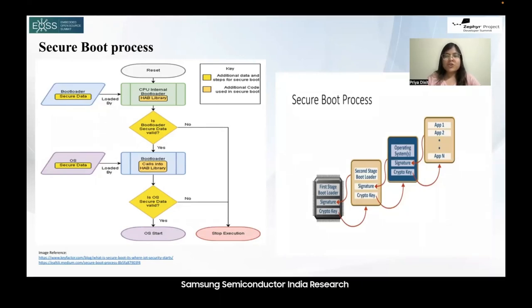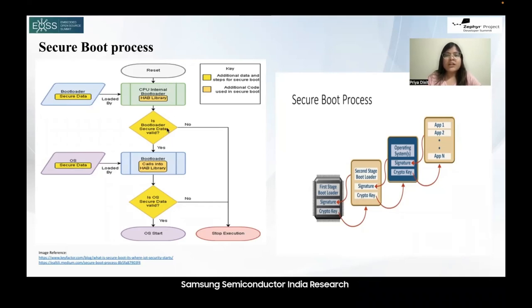So when secure boot is enabled, the firmware verifies the digital signature of each executable file from the firmware to bootloader then to the operating system before allowing them to run. This guarantees that the executables are from a trusted source and have not been modified. Here we see a term HAB — High Assurance Boot library — which is a secure boot library for i.MX processors designed to protect the system against various forms of attacks. This is done by establishing a chain of trust from initial power-on of the system to operating system execution, ensuring that each component loaded during the boot process is cryptographically signed and has not been modified. This ensures that the system starts up securely and only runs authorized and verified software components, providing a foundation of trust.